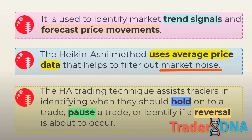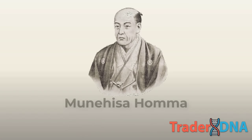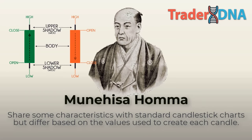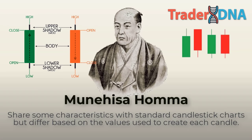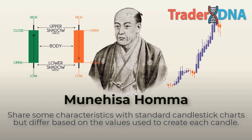Traders can adjust their positions accordingly — either avoid making losses or lock in a profit on the chosen position. Heiken Ashi charts, developed by Munahisa Hama in the 1700s, share some characteristics with standard candlestick charts, but differ based on the values used to create each candle. Instead of using the open, high, low, and close like standard candlestick charts, the Heiken Ashi technique uses a modified formula based on two-period averages. This gives the chart a smoother appearance, making it easier to spot trends and reversals, but also obscures gaps and some price data.